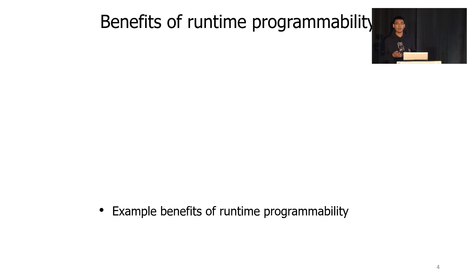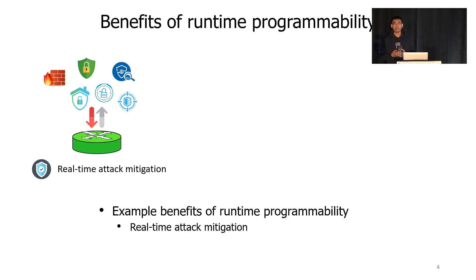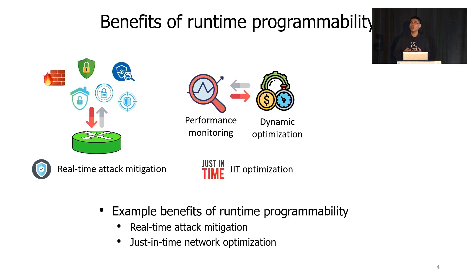So runtime programmability has a lot of benefits. Let me give you a few examples. First, using runtime programmability, we can insert the needed security function at runtime to mitigate attacks in real time. If the attack changes, we can also change the defense accordingly. And we can also do just-in-time network optimization to improve network performance. For instance, by monitoring the traffic characteristics at runtime, we can re-optimize the switch implementation dynamically to achieve higher performance.